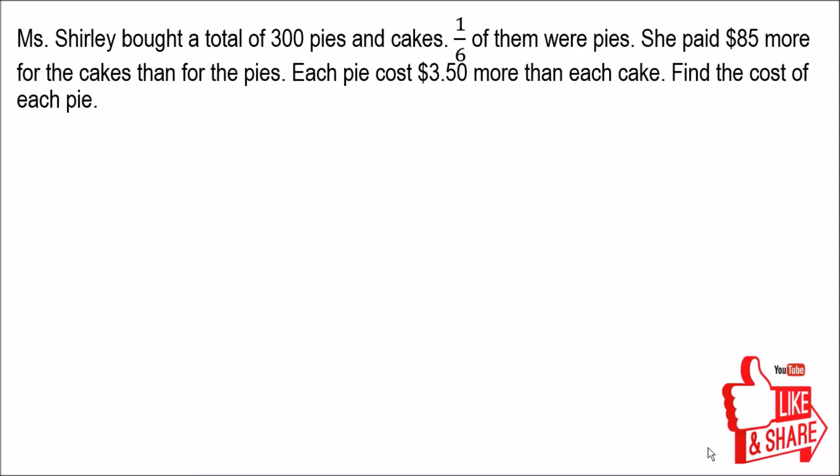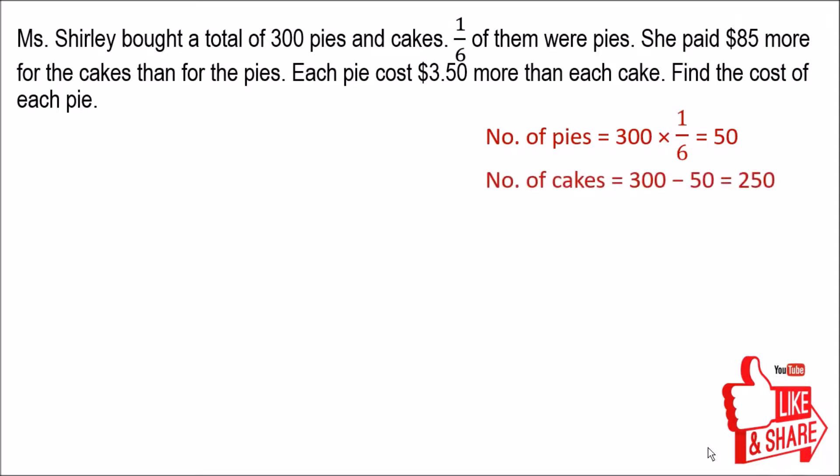With the information that the total is 300 pies and cakes, we can find the number of pies, which is 300 multiplied by one sixth, giving us 50 pies. The number of cakes would be 300 subtract 50, which gives us 250 cakes.